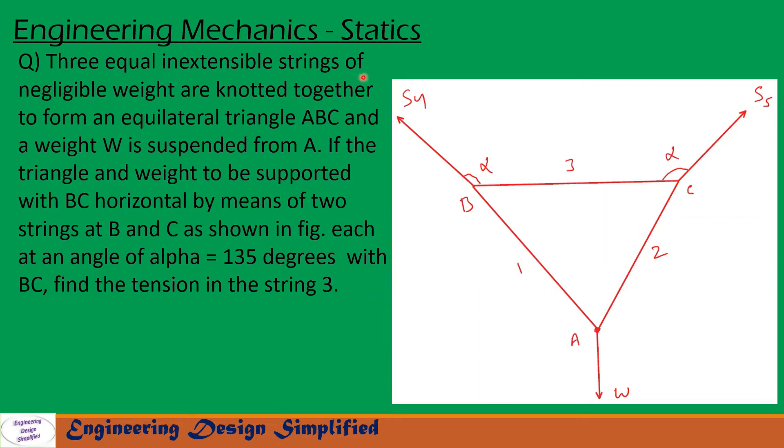Three equal inextensible strings of negligible weight are knotted together to form an equilateral triangle ABC and a weight W is suspended from A. If the triangle and weight to be supported with BC horizontal by means of two strings at B and C as shown in figure, each at an angle of α equal to 135 degrees with BC, find the tension in string 3.